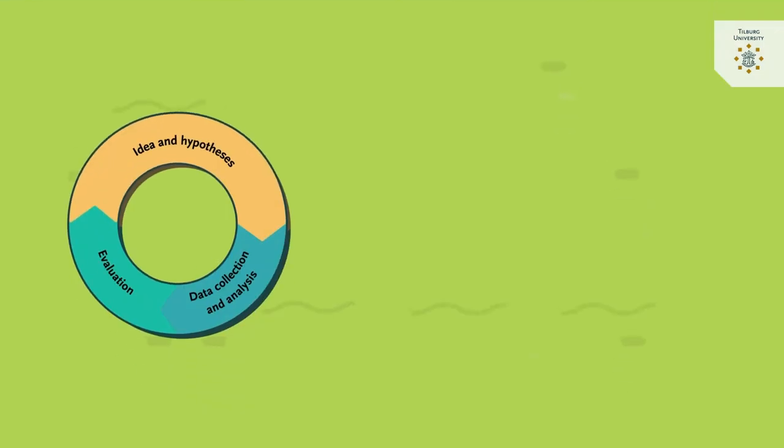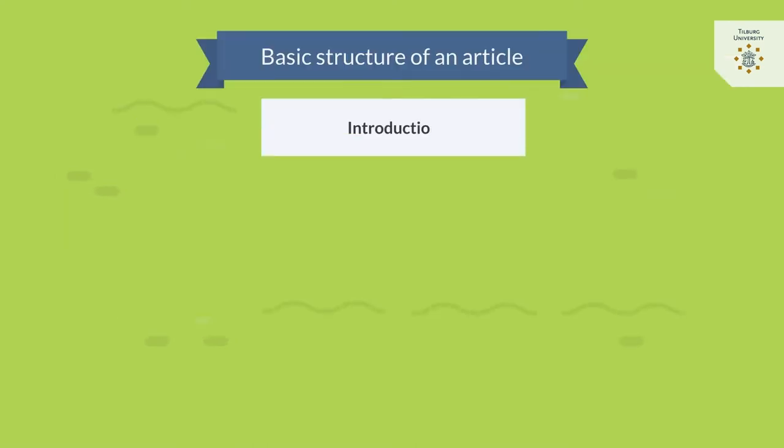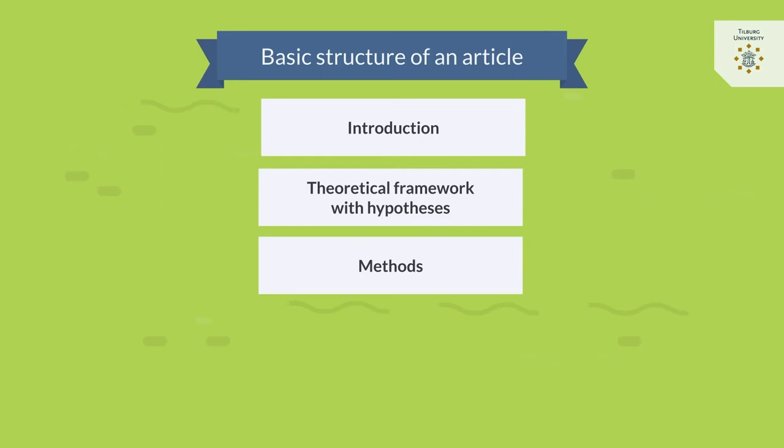The basic structure of an article follows the empirical cycle. The article starts with an introduction, followed by a theoretical framework, a method section, results, a discussion, and conclusion.